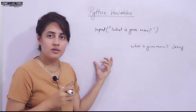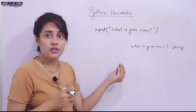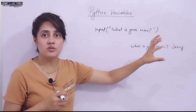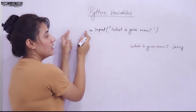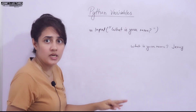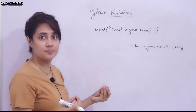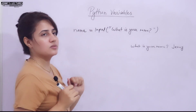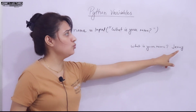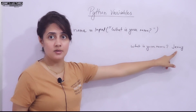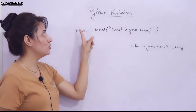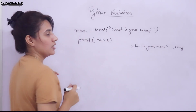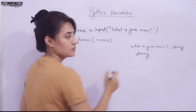The variable is created at the moment you first assign a value to it — that's it. Suppose I want to store the name 'Jenny'. Before the input call, I write down a variable name — you can use a, b, c, x, y, z, anything — but it's better to use a meaningful name. Since I'm storing a name, I use 'name'. So: name = input('What is your name?'). When you enter 'Jenny', it gets stored in the variable 'name', and then you can simply print(name) to get the result.